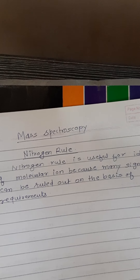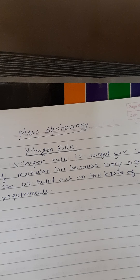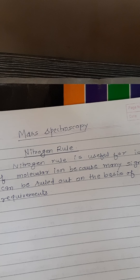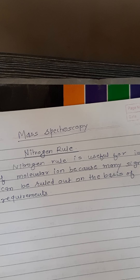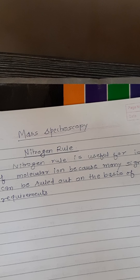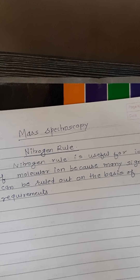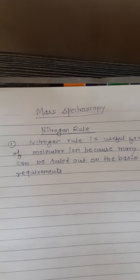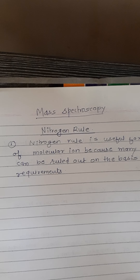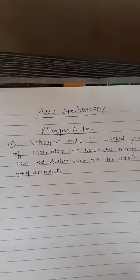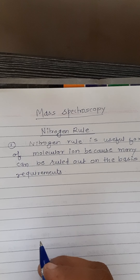The nitrogen rule is useful for the identification of the molecular ion. If there is any molecular ion, then we can identify it using the nitrogen rule, because when we have a spectra, many signals and peaks are present. On the basis of the nitrogen rule, we can easily identify the particular molecular ion.